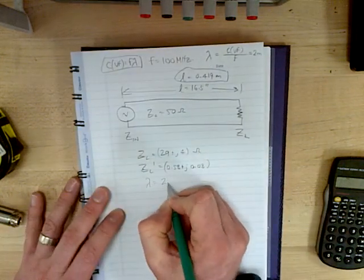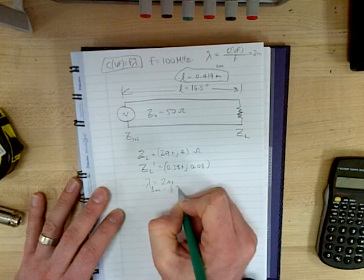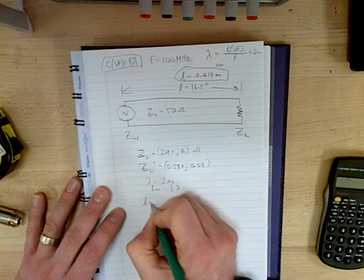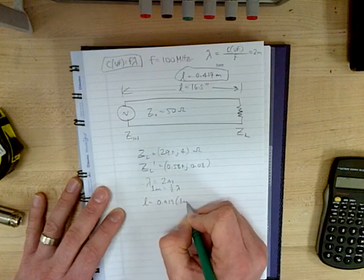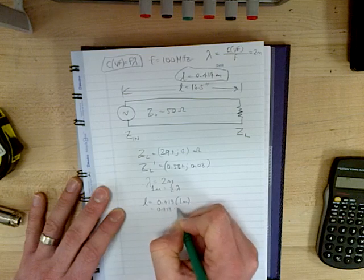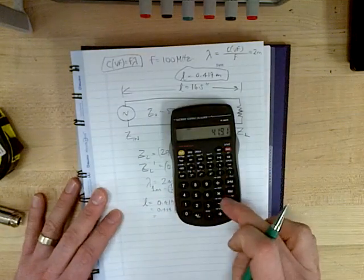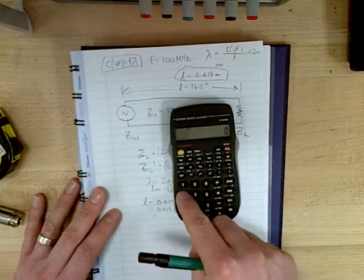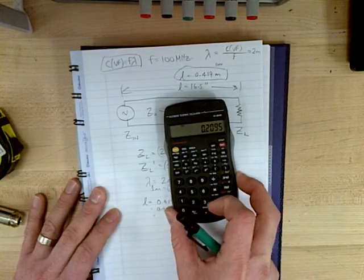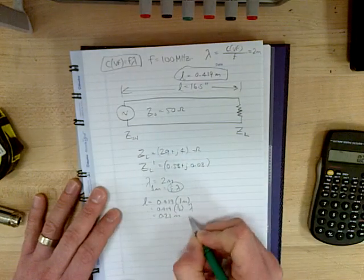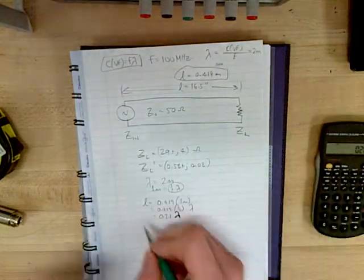So if the wavelength is equal to 2 meters, one wavelength is 2 meters, you could say 1 meter is half a wavelength. So if the length is equal to 0.419 meters, it's 0.419 times one meter, would be 0.419 times half a wavelength. So 0.419 divided by 2, 0.2095, let's say 0.21. Oh no, sorry, 0.21 wavelengths. Yeah, 0.21 wavelengths.